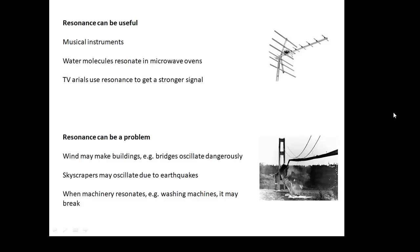Resonance can be useful: musical instruments use it, microwave ovens use resonance to make water molecules vibrate and heat food, and TV aerials use resonance to get a stronger signal. Resonance can also be a problem: wind can make buildings and bridges oscillate — some bridges have collapsed because of resonance — skyscrapers may oscillate due to earthquakes, and parts of machinery may start wobbling violently. For example, washing machines sometimes go crazy at certain frequencies and may break. So resonance can be both useful and a problem.